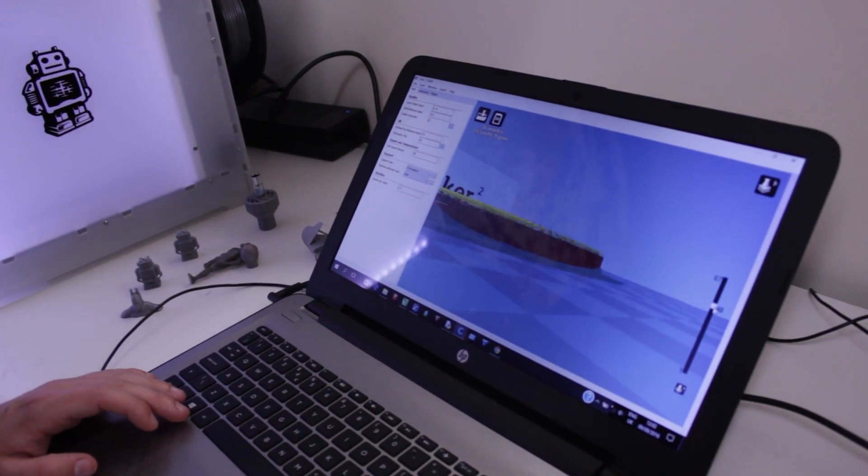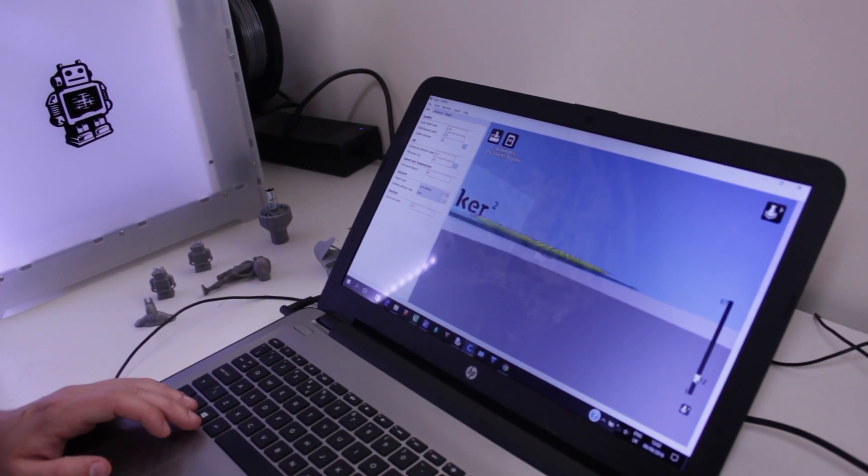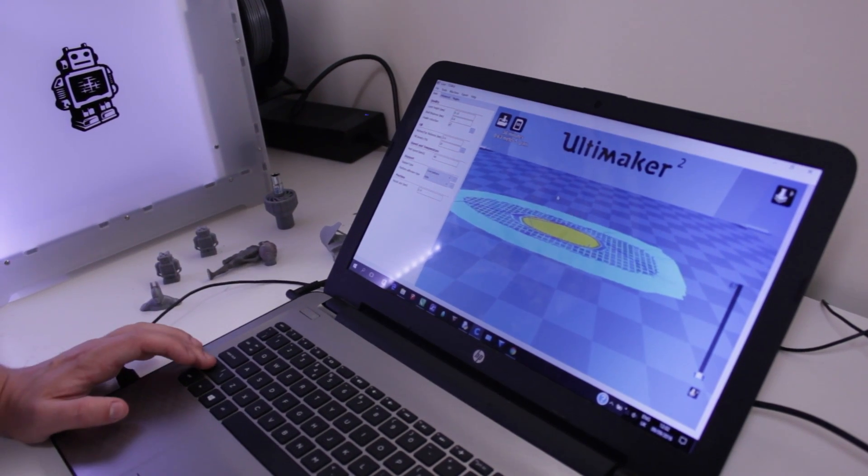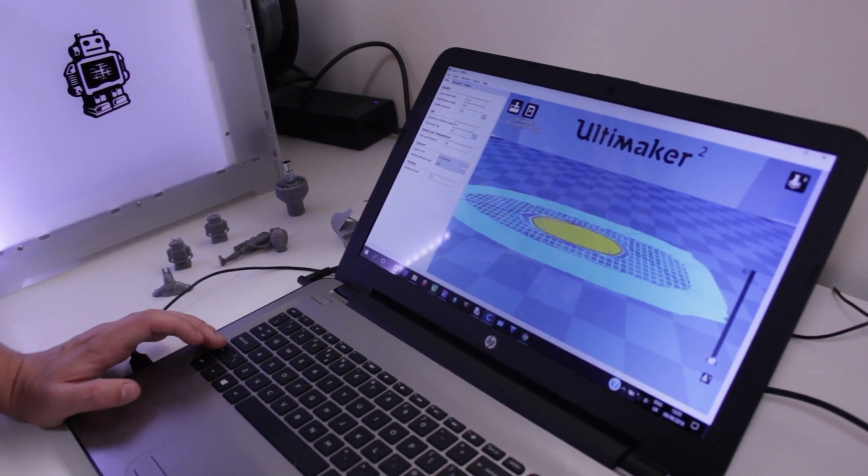And then I can scroll down through this and this will show you the actual path that the 3D printer is going to take. So it's kind of like G-code if anyone is familiar with CNC machines.